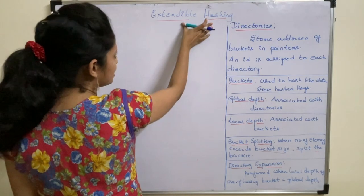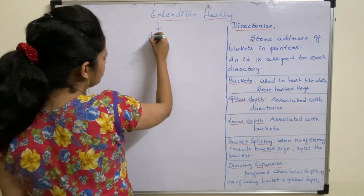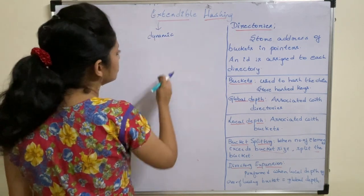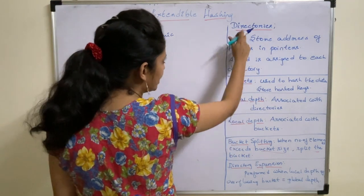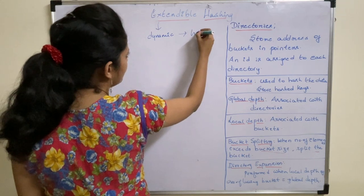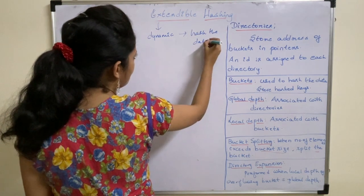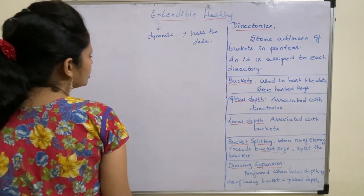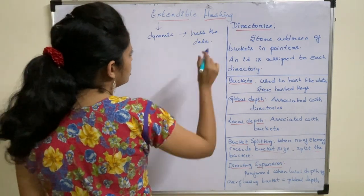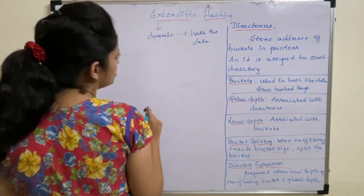Here we will discuss about extendable hashing. Extendable hashing is a dynamic hashing method where buckets and directories are used to hash the data. First, we need to see the terms which we use in extendable hashing.